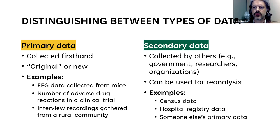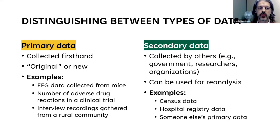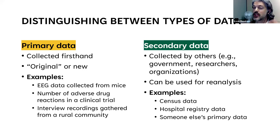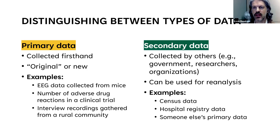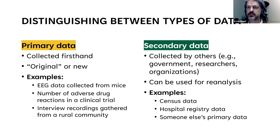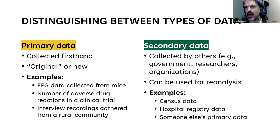We can distinguish between different types of data. Primary data is collected firsthand — it's original or new data. Examples include the number of adverse drug reactions in a clinical trial or interview recordings gathered from a rural community. Secondary data has already been collected and you are reusing it for a new research project or question, often for reanalysis. Examples include census data, hospital registry data, or someone else's primary data that you repurpose to ask new research questions.